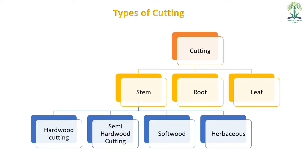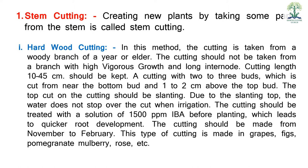Types of cutting — cutting mainly 3 types: stem cutting, root cutting, and leaf cutting. Stem cutting is further divided into hardwood cutting, semi-hardwood cutting, softwood cutting, and herbaceous cutting. Stem cutting means creating new plants by taking some parts from the stem.